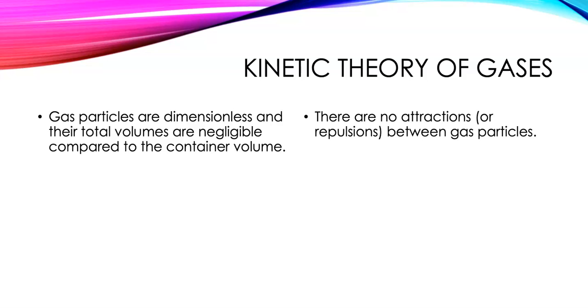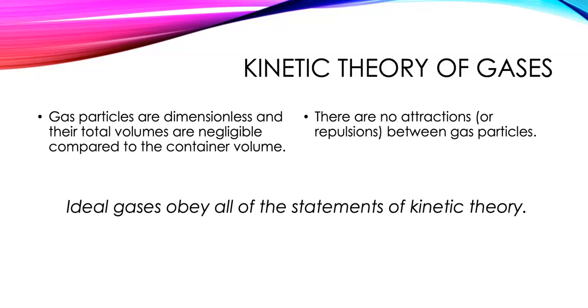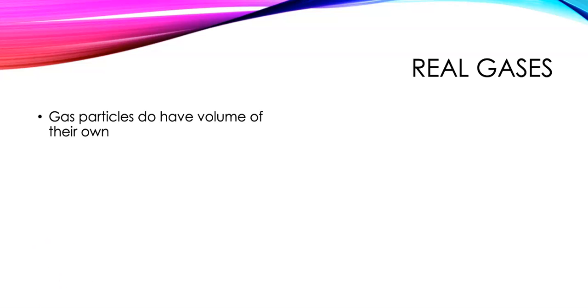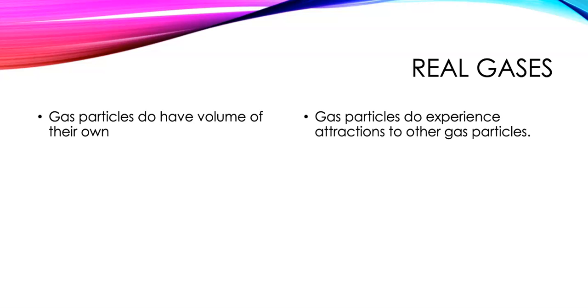Kinetic theory also states that there are no attractions or repulsions between gas particles. But that all seems fine until we think about actual properties of molecules and atoms. We know that atoms have a volume — we have periodic trends and measurements of atomic radii, so if they have a radius, they have a volume. We also know that molecules and atoms are attracted to each other: we have dipole-dipole attractions with polar molecules and London forces for all species. So there are attractions, even though they're weak.